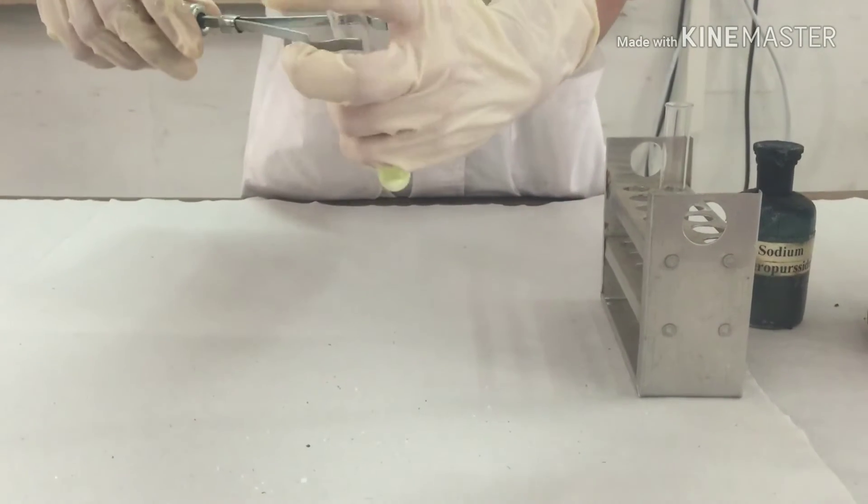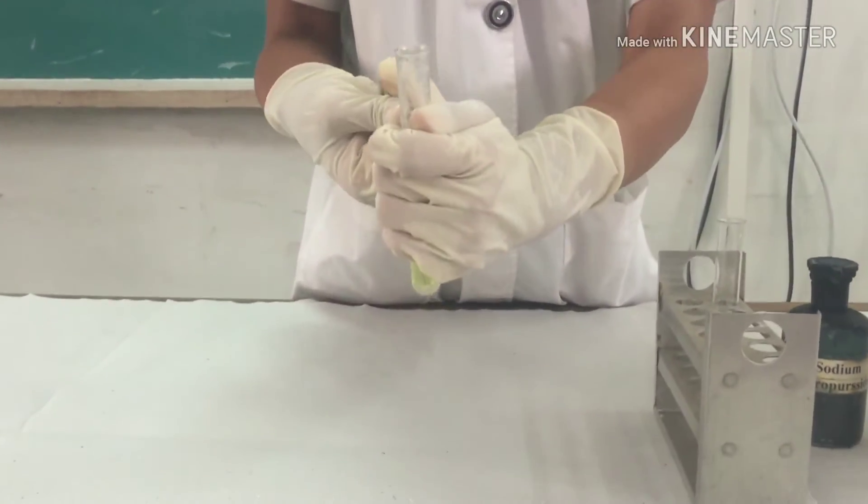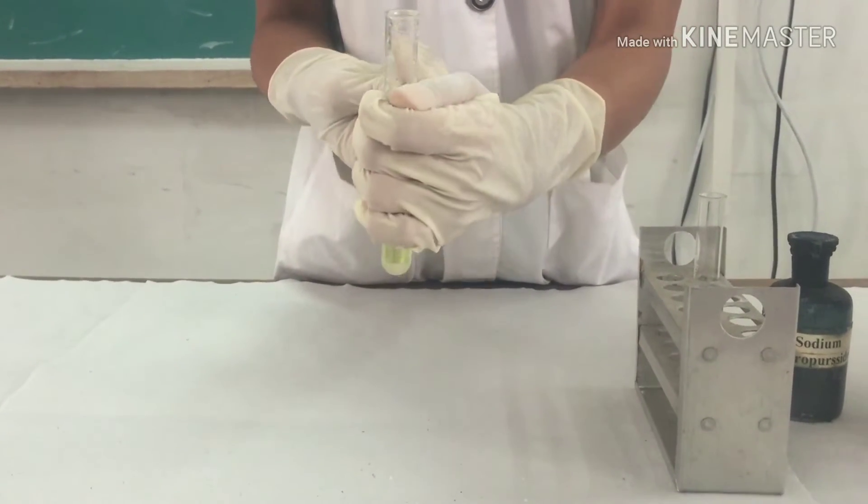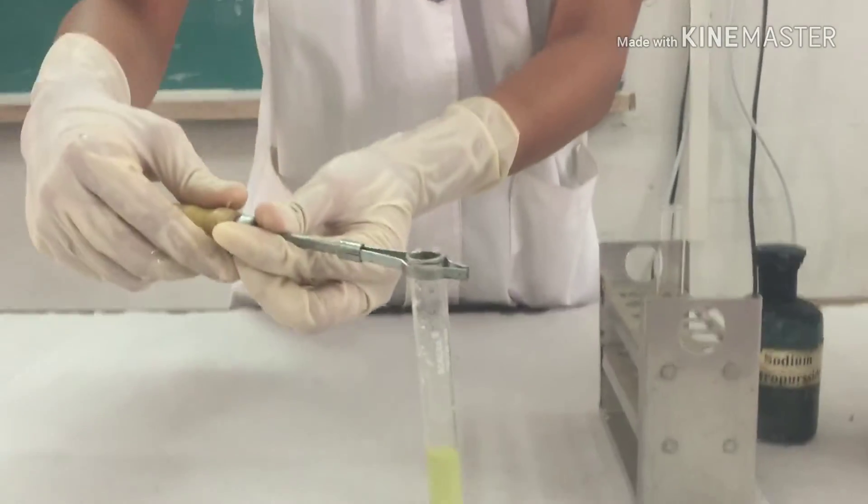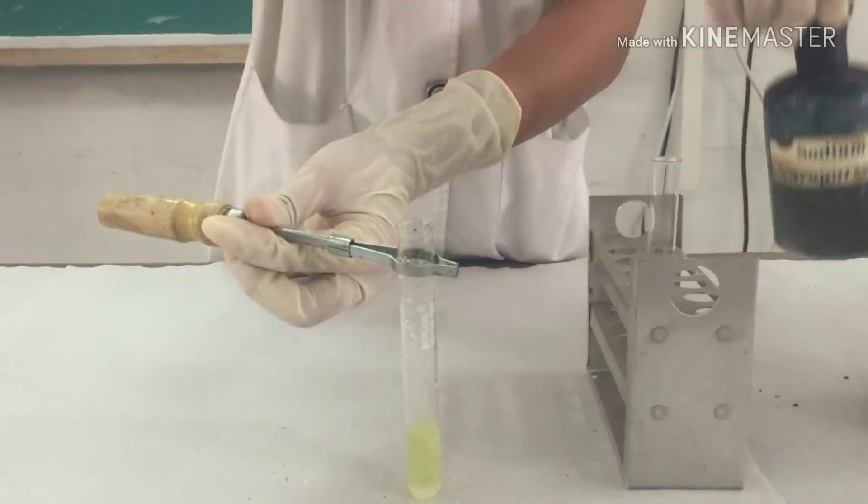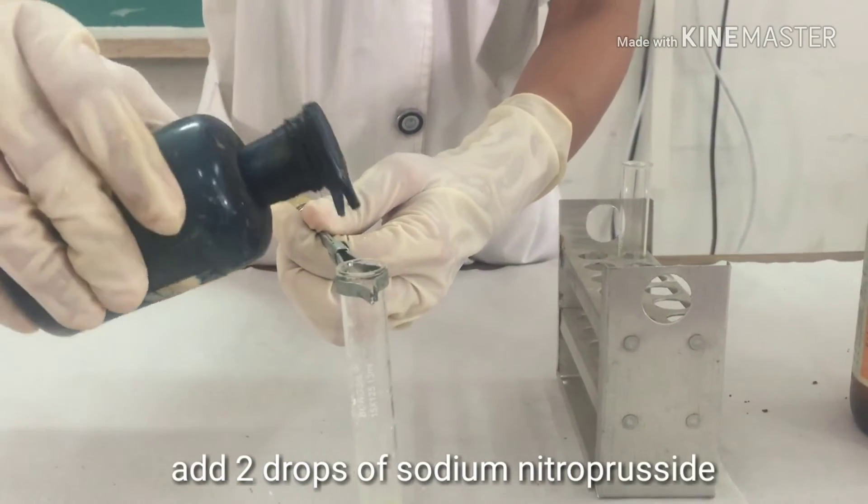Now hold the test tube firmly with a test tube holder. To this add 2 drops of sodium nitroprusside.